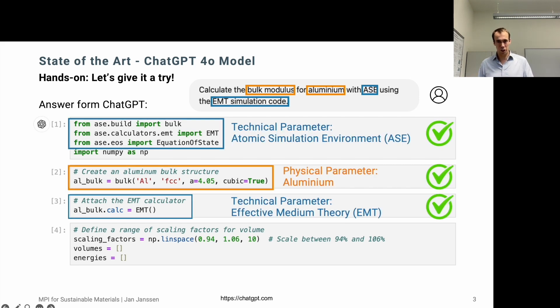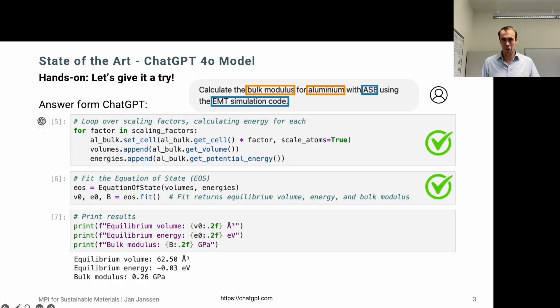First, it's correctly using the atomistic simulation environment. It's selecting aluminum as material and the effective medium theory as simulation code. It's correctly straining this structure and then applying the equation of state. But the calculated bulk modulus is completely wrong. 0.26 gigapascal makes absolutely no sense. The experimental reference is 62 gigapascal. So what went wrong here?